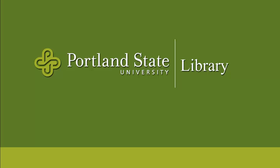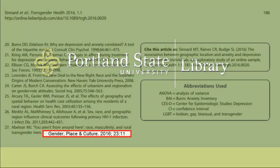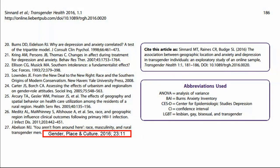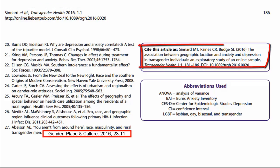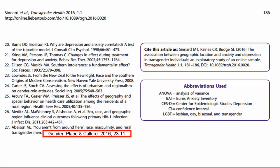We're going to solve the problem of finding a journal article that you've read about in other scholarship. Let's look at an example of something that can happen often, which is that you're reading a particularly good article and you notice an article that that article has cited. In this case, I'm noticing that there's a reference — a cited article — that I want to follow up on.